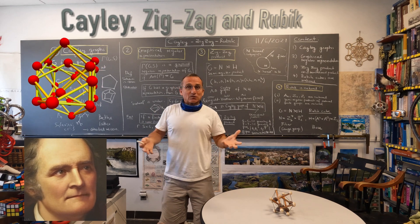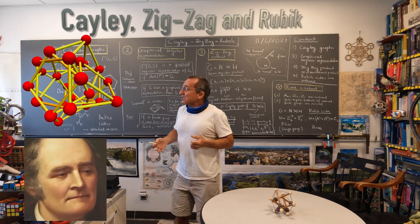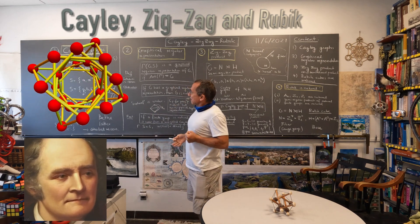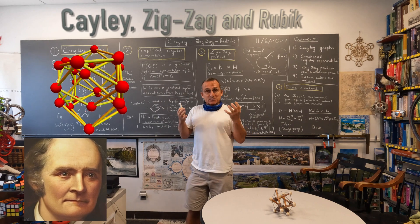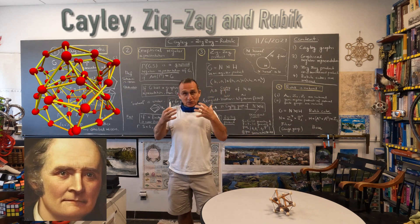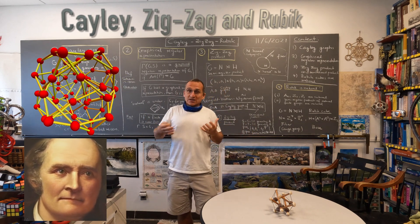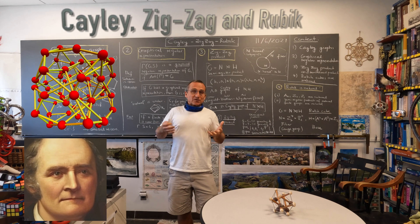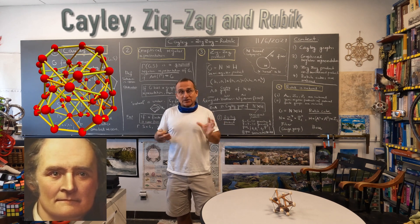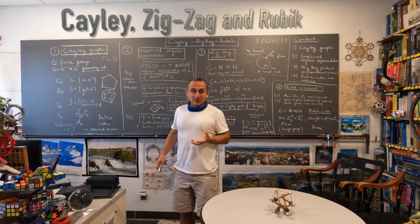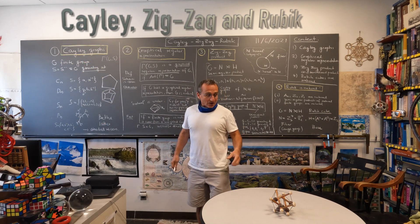Cayley graphs are a beautiful connection between algebra and geometry. A Cayley graph is defined if you give a generating set. I always assume that the generating set is invariant under taking inverses, so that you have undirected graphs.